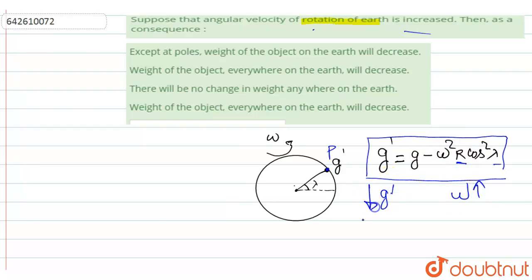But when we talk about poles, they are special cases. Because at this point, lambda becomes 90 degrees, so g dash becomes g. This means g at poles is independent of omega or speed of rotation. So g at poles will always remain g.